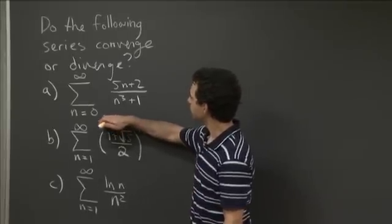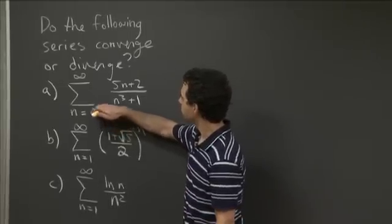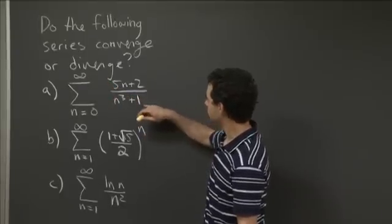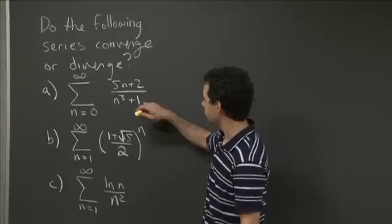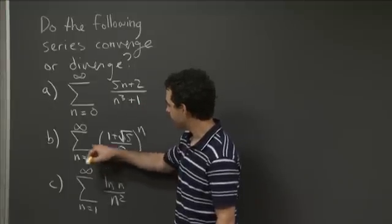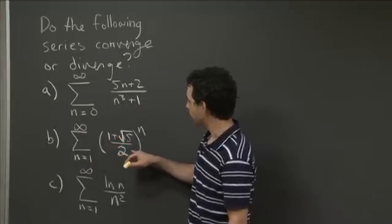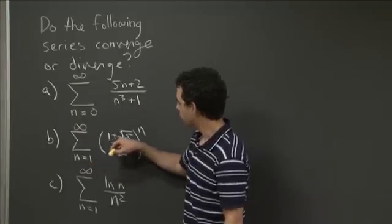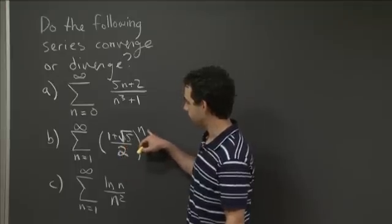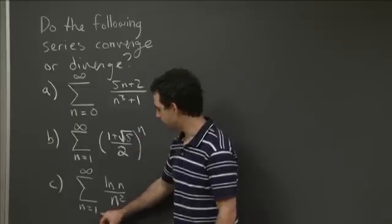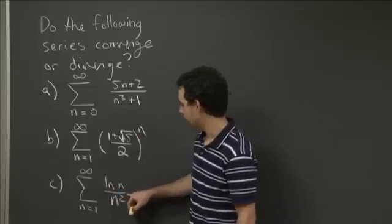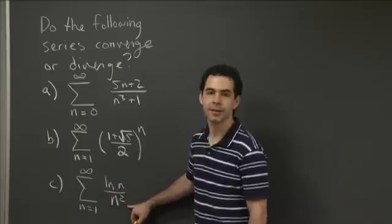The first one is the sum from n equals 0 to infinity of 5n plus 2 divided by n cubed plus 1. The second one is the sum from n equals 1 to infinity of the quantity 1 plus the square root of 5 over 2, all that to the nth power. And the third one is the sum from n equals 1 to infinity of the natural log of n divided by n squared.